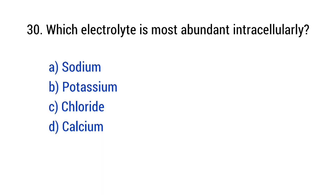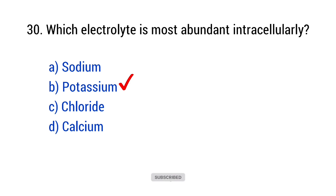Question number 30: Which electrolyte is most abundant intracellularly? The right answer is option B — Potassium.